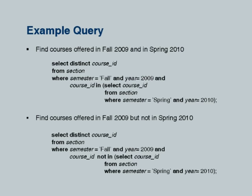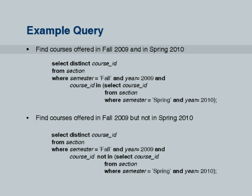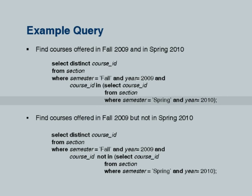You've probably seen these examples. The first one is a query which finds courses offered in fall 2009 and spring 2010 using our university schema which you have been seeing since this morning. The relevant relation is the section relation which says which course is offered in which semester, which year, and the section information. Using this we want courses offered in fall 2009 and in spring 2010. We have used a subquery which checks if the course ID for a course in fall 2009 is also present in the set of course IDs which run in spring 2010. We are using the IN clause here with a subquery.